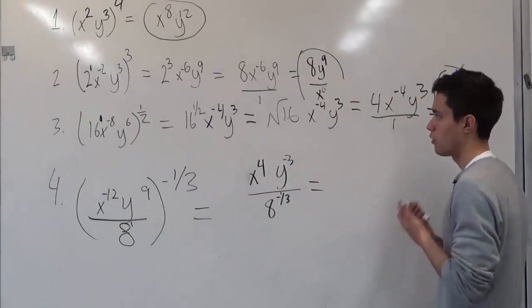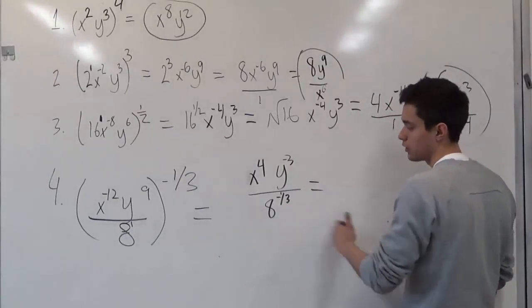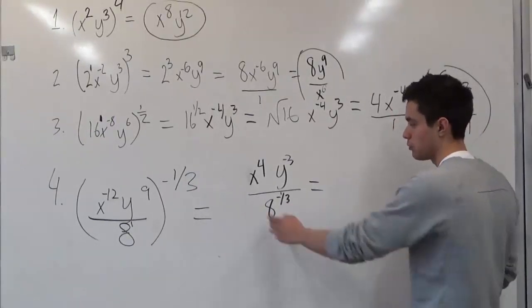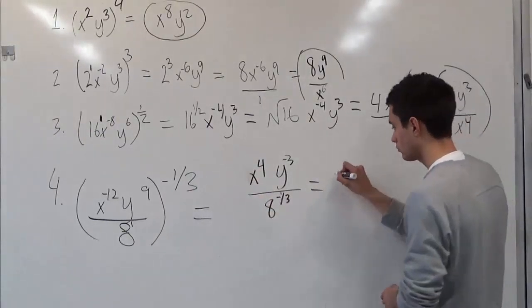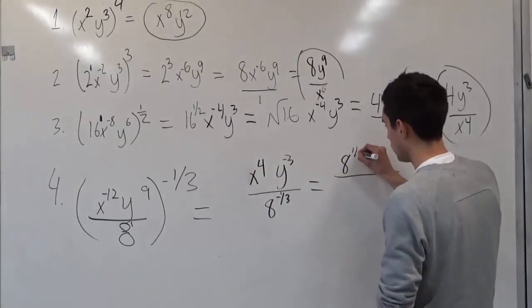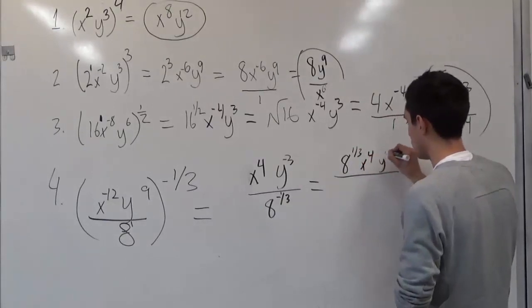So as we said before with our rules, when we have a negative exponent, we always want to convert it to be positive. So in order to do that, let's bring it up top. So we have 8 to the 1 third, x to the fourth, y to the negative 3.